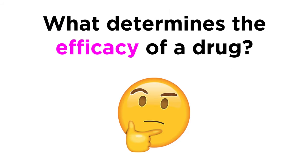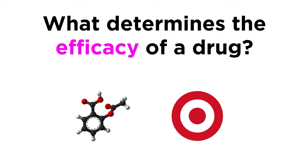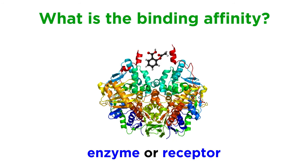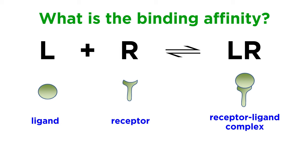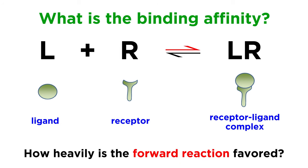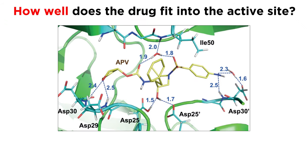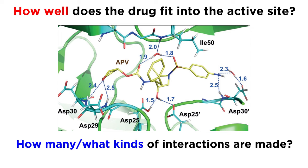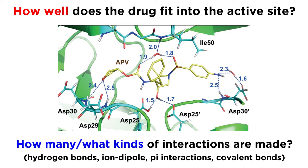So what is it that determines the efficacy of a drug? To understand this, we have to look at how the drug interacts with its target. If the purpose of the drug is to bind to the active site of a receptor or enzyme, how well does it bind? What is its binding affinity? If describing binding using this equilibrium from before, how heavily is the forward reaction favored — the one that produces the LR complex? How well does the drug fit into the active site? How many electrostatic interactions are being made, and of what variety? Are there hydrogen bonds? Perhaps even covalent interactions?